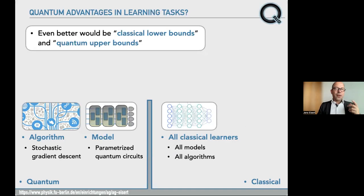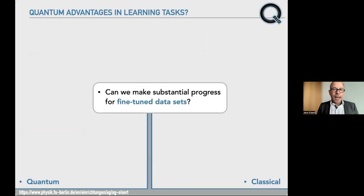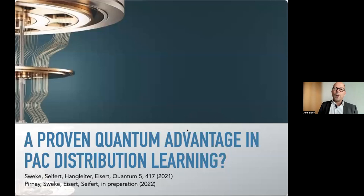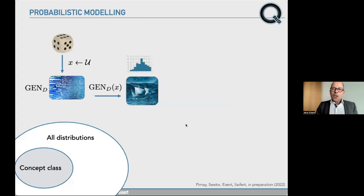This is also the setting we have in mind for the rest of the talk, but we will be forgiving in one specific way — we take the liberty to think about highly structured and fine-tuned data, and ask whether we can make substantial progress on the question of a specific quantum algorithm being better than any possible conceivable learner, but for fine-tuned datasets. We allow ourselves to think of specifically structured datasets, but otherwise we want to see: can quantum devices do better than classical learners, no matter what?